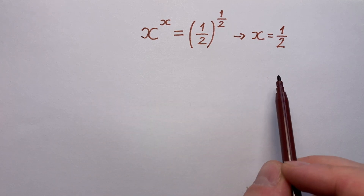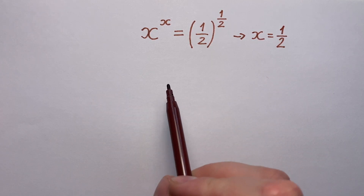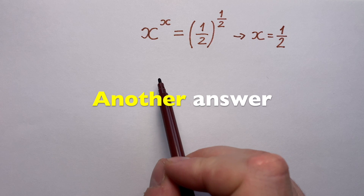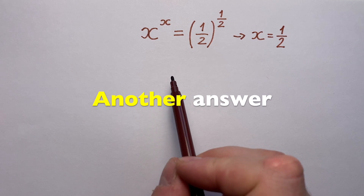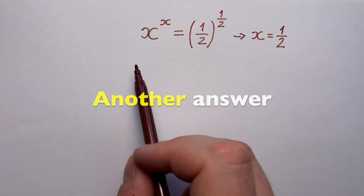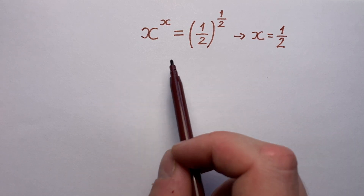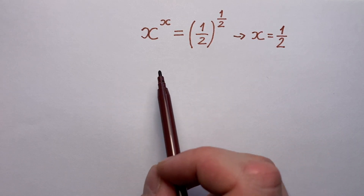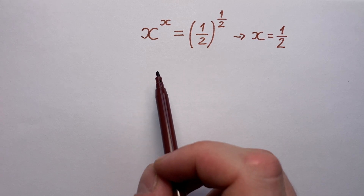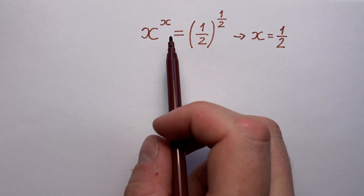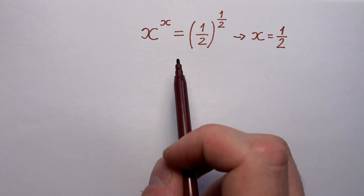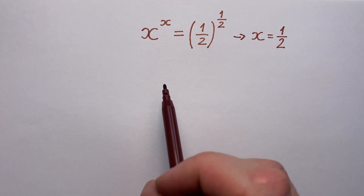But there is a tiny percent of people who instantly see another answer, and it's not one half. Can you see another answer here? A lot of people think that a second solution doesn't even exist. But let's check it.